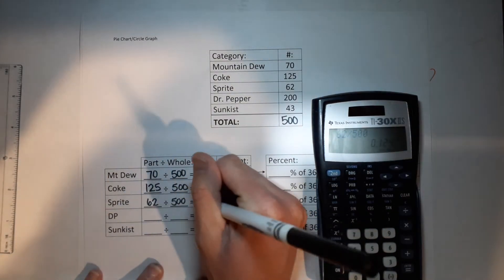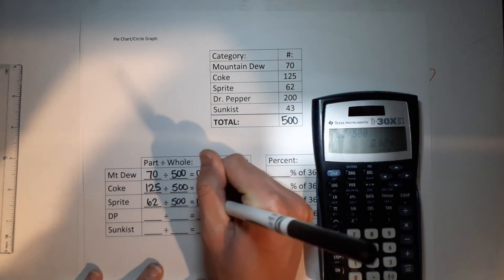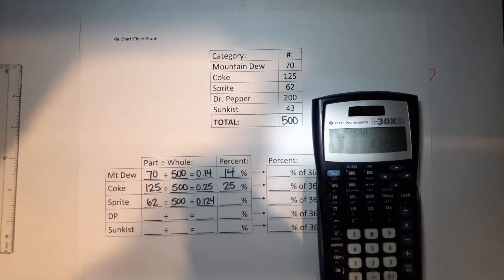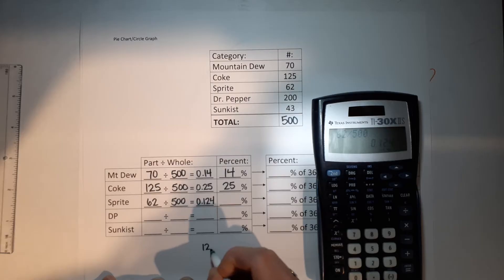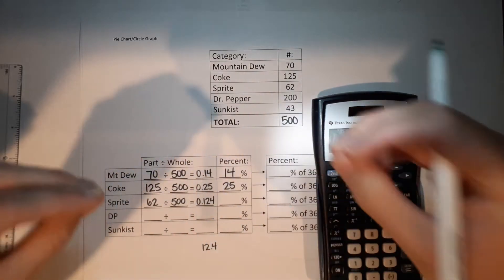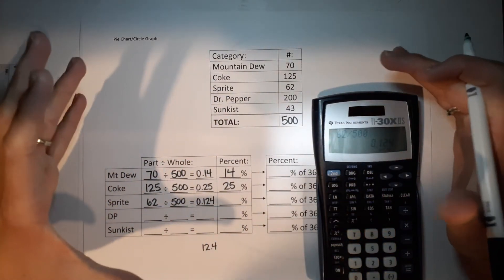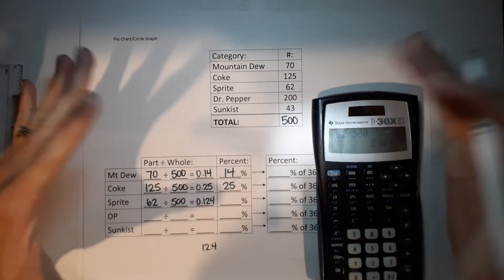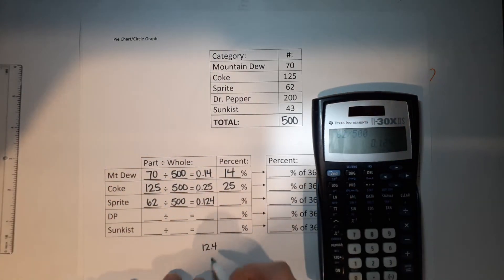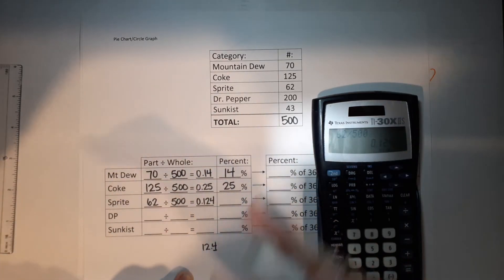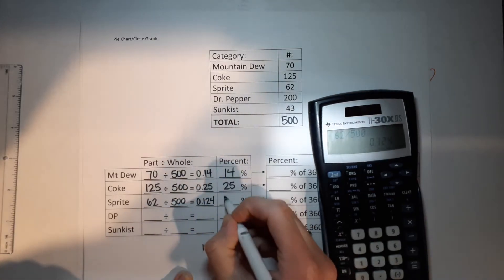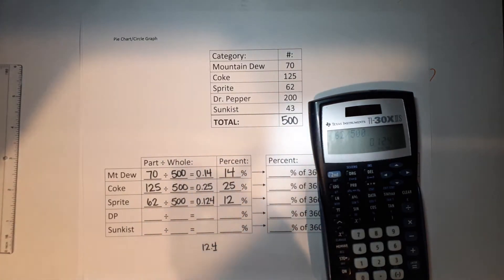Sprite: 62 out of 500. 62 divided by 500 gives 0.124. Move the decimal over and you get 12.4. At this level your teacher will probably want you to round to the nearest whole number. Since it's a 4, we round down and keep it at 12%. If it were 5 or above, we'd round up to 13%.